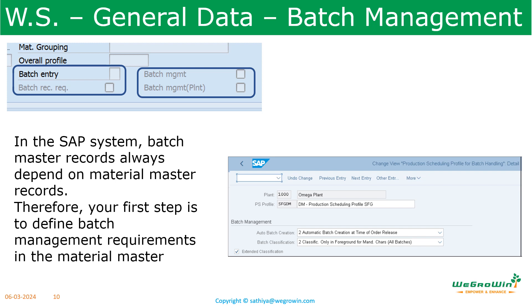An important field is batch management. Here we see two fields: batch management and batch management plant. Batch management is in the MARA table, which is applicable at the client level. Batch management plant is in the MARC table, applicable at the plant level. Batch management can be maintained in different views of material master — for example, sales and distribution, general plant data, purchasing view, and here in the work scheduling view. All views have the same tick marks — if you change this field value anywhere, it will be updated in other views also. So batch management can be done in any one of these four views.